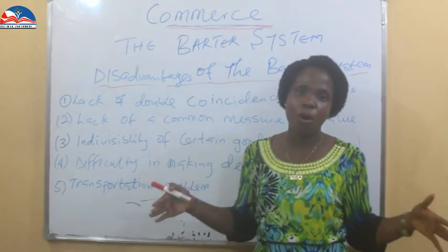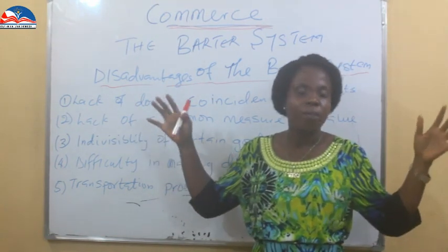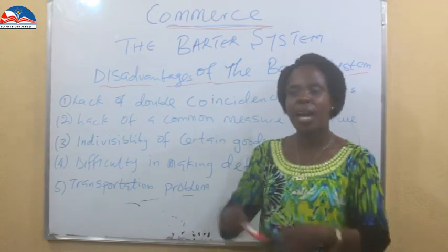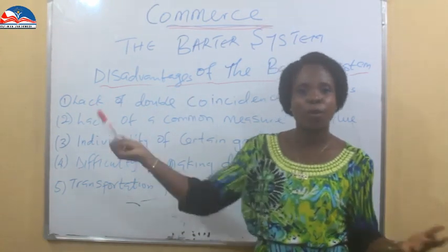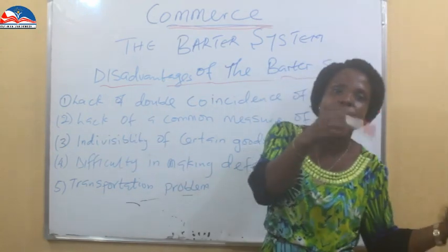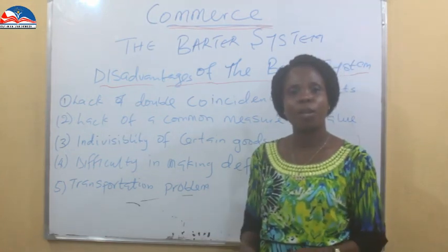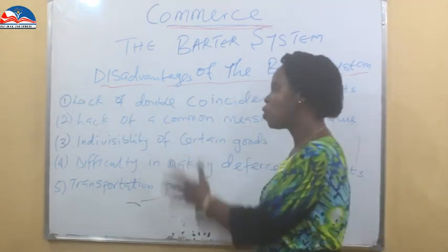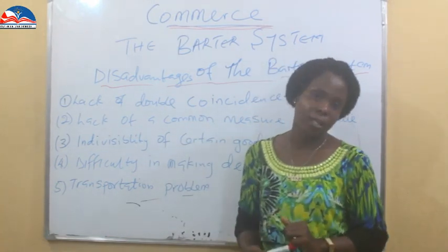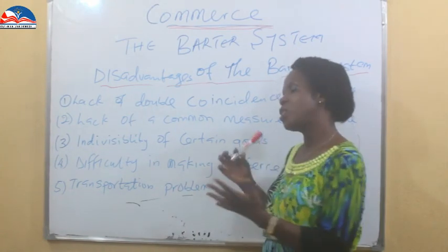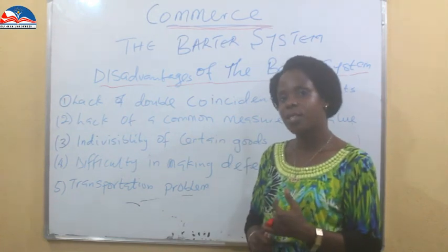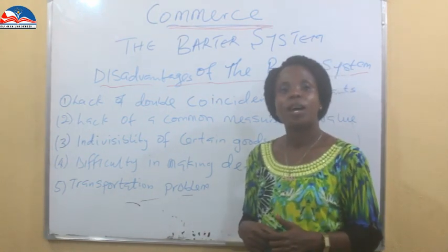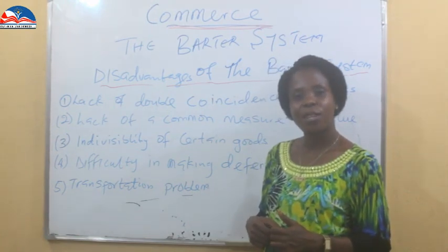Transportation problem: if I have a large bulk of things to exchange — say plenty of gallons of oil to exchange for a variety of products like garri, rice, yam, and plantain — how do I transport it all to where those who can exchange with me are located? Transportation becomes a problem. These are the disadvantages of the barter system, though the list is not exhausted. This is where we wrap up our class for today. We've seen the definition, the advantages, and the disadvantages of the barter system. Come to our next class where we discuss other topics in Commerce. Thank you for dropping by — keep subscribing and keep sharing.